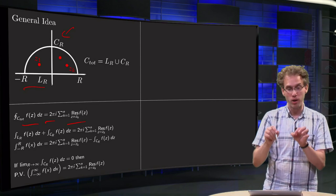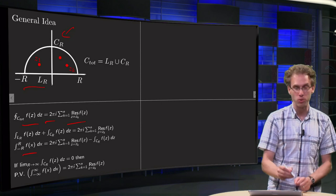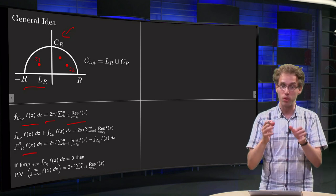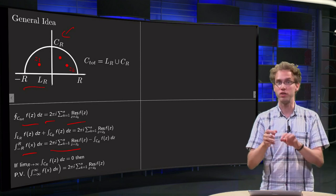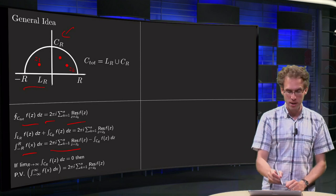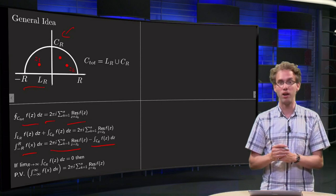So the integral along LR will be the integral from minus R to R f(x) dx. That's the one we are looking for. It's some number. 2 pi i times the sum of the residues, which will be some number, so that's fine, minus the integral along CR.